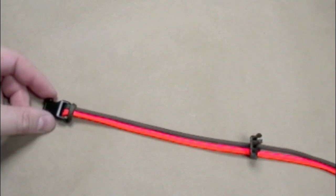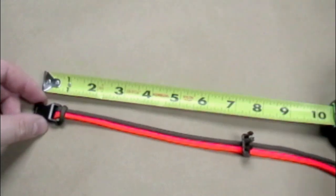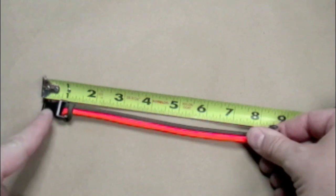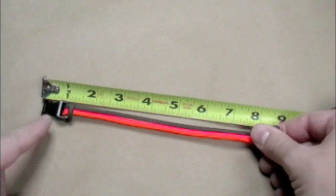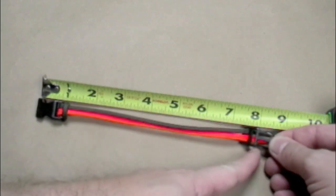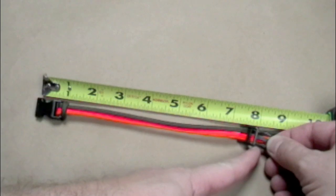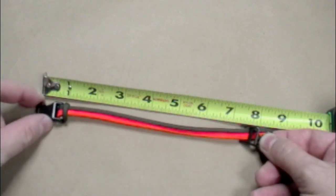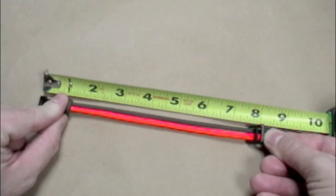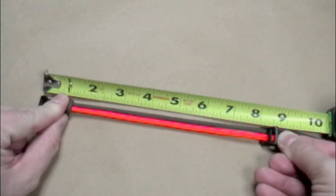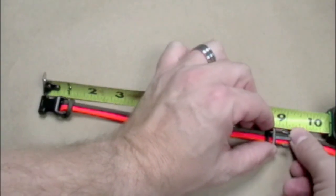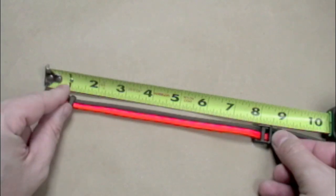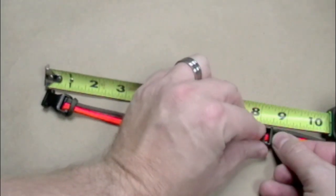In our case, we're going to make an eight and a half inch bracelet. You want to measure from the end of the female buckle where the opening is to the base of the prongs on the male buckle. You don't want to actually measure the prongs because those will go inside the female end. Just adjust that until we get to our measurement, which in our case is eight and a half. Now we've got our eight and a half inch measurement.